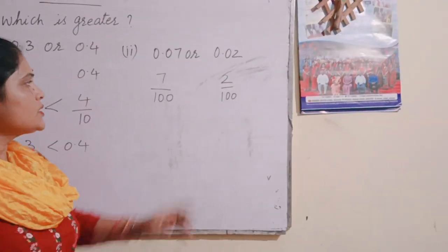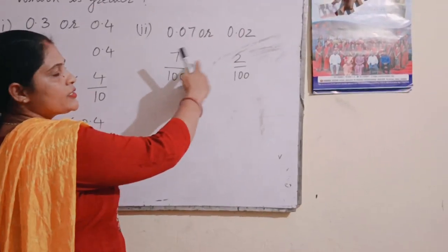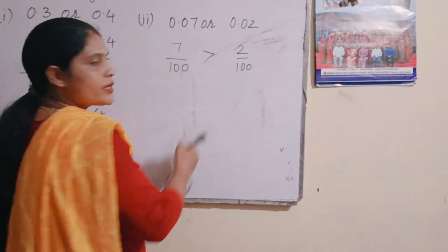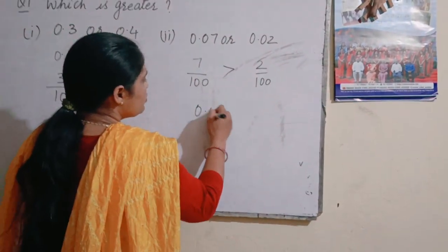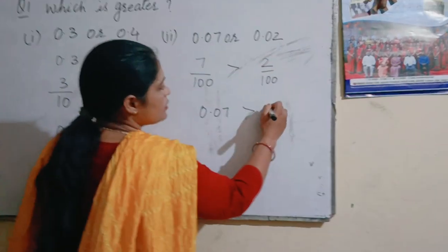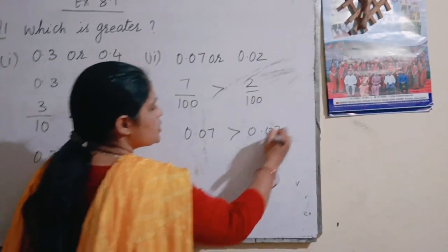It is easy to compare with the fractions. 7 is greater than 2. So this one is greater. That means 0.07 is greater than 0.02.